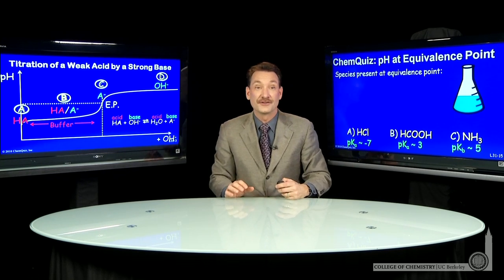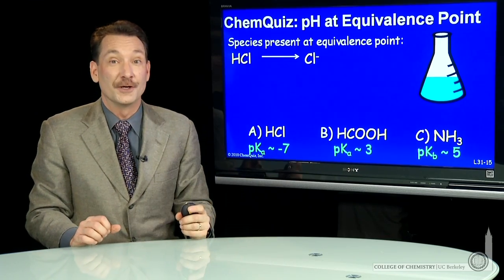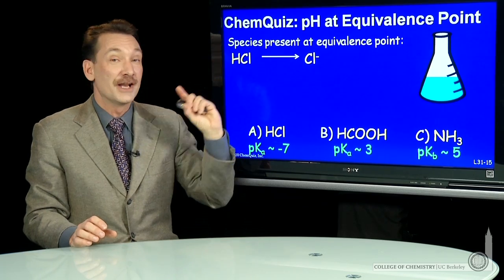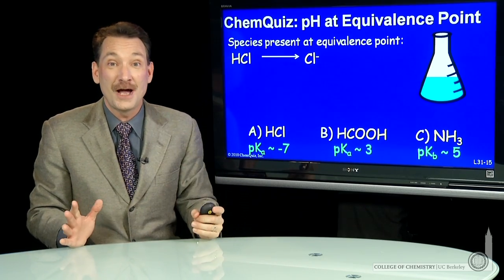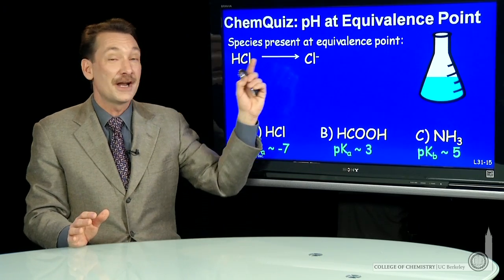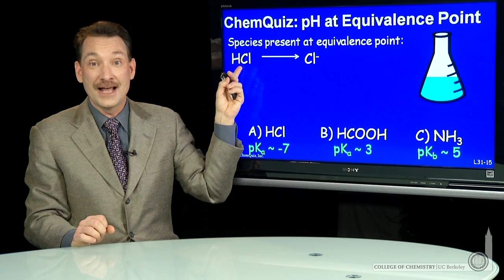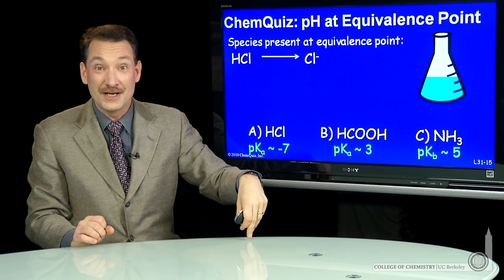So let's look at how that looks. We have three possible species, HCl the first one. When I take HCl to equivalence point and convert it all into its conjugate base, its conjugate base is Cl minus, the chloride ion. Chloride ion is a horrible base. HCl, very strong acid, means its conjugate base, very weak base.